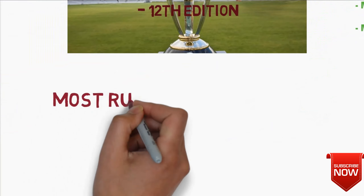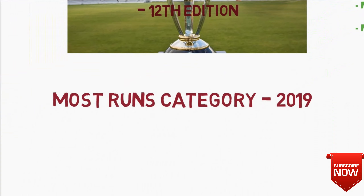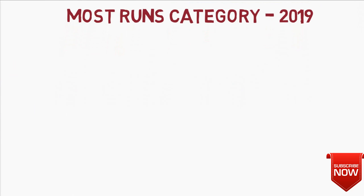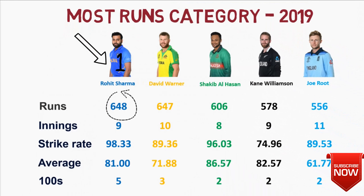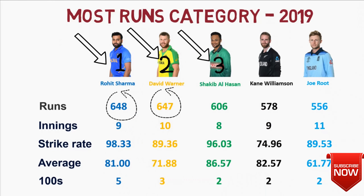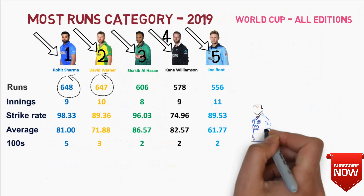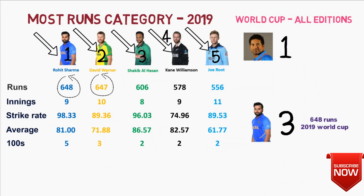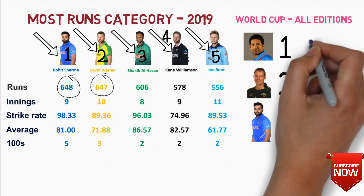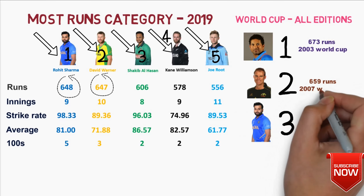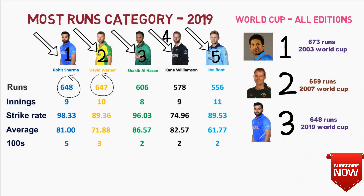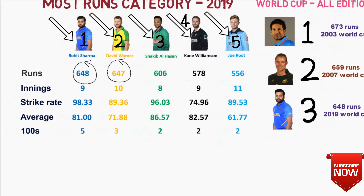The first category is most runs hit by a player in a single edition of the World Cup. Looking at the top 5 positions in the 2019 edition, Rohit Sharma tops the list with 648 runs, followed by David Warner with a shortfall of just 1 run. With this performance, Rohit Sharma has reached 3rd position in this category after Sachin Tendulkar and Matthew Hayden. Sachin Tendulkar scored 673 runs in the 2003 World Cup, whereas Matthew Hayden scored 659 runs in the 2007 World Cup. There is a very close margin between the top 4 positions in this category.